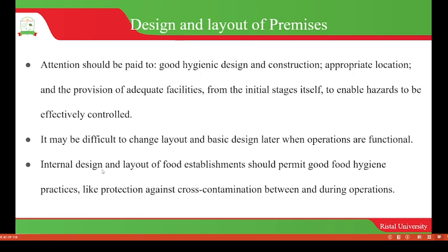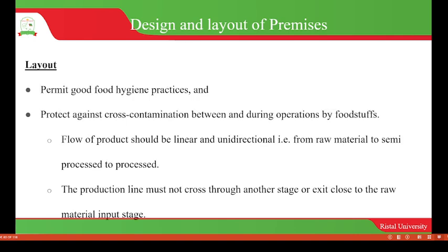The internal design and layout of food establishments should permit good hygiene practices, such as protection against cross-contamination between and during operations. Cross-contamination can be prevented when the flow of products is linear and unidirectional — that is, from raw materials to semi-processed to processed food — because flow in the opposite direction will always cause cross-contamination.